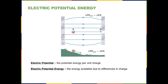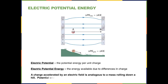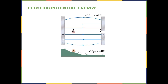The electrical potential energy is the energy available due to the difference in charges between two points in space. So a charge being accelerated from point A to point B is analogous to a mass rolling down a hill from where it is in the diagram down to where it becomes flat.